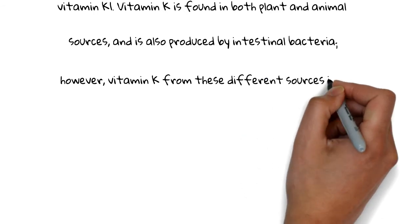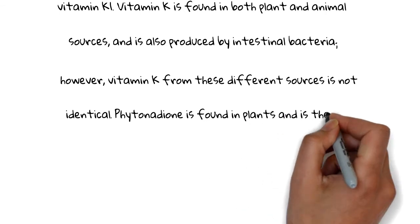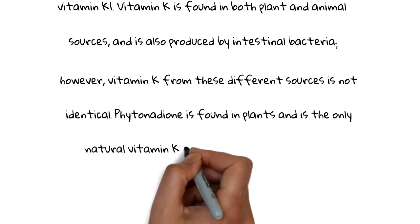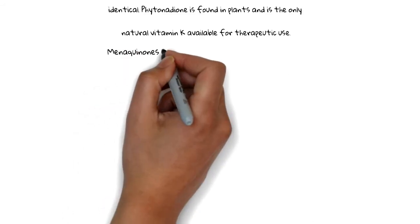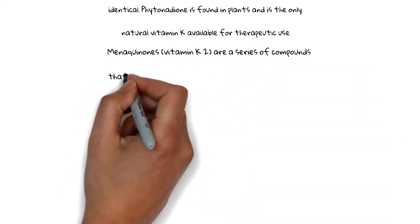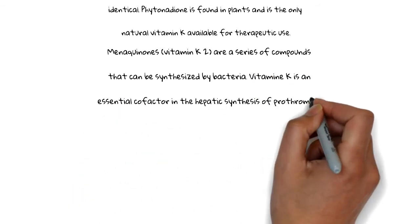Phytomenadione is found in plants and is the only natural vitamin K available for therapeutic use. Menaquinones vitamin K2 are a series of compounds that can be synthesized by bacteria.